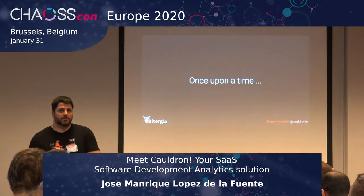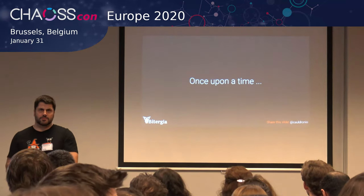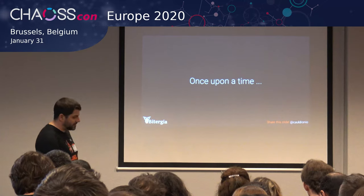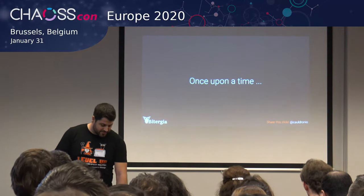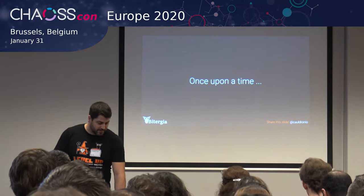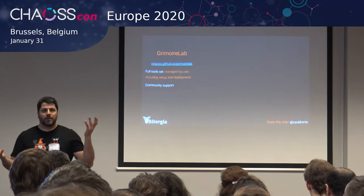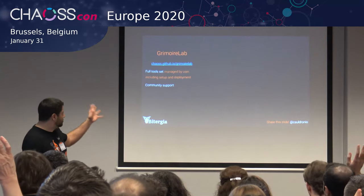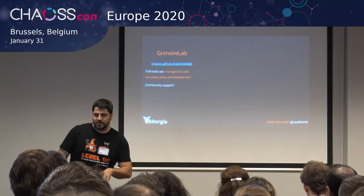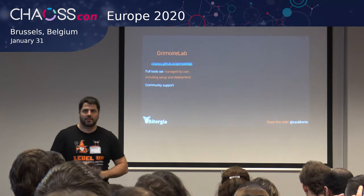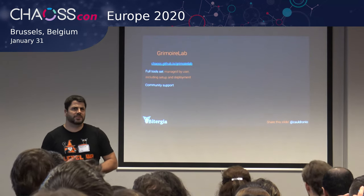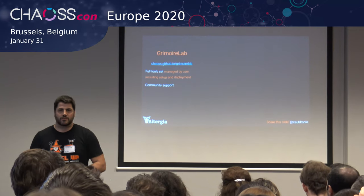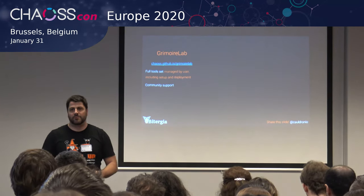The idea is to present something we have been working on at Vitellia during the last six months. You probably already heard about Cauldron some time ago during some testing. I'd like to start with a story to justify this work. Basically, Grimoire Lab is the open source tooling we started developing around six years ago, after 15 years of research about how to measure open source collaboration. We ended up with this Grimoire Lab thing.